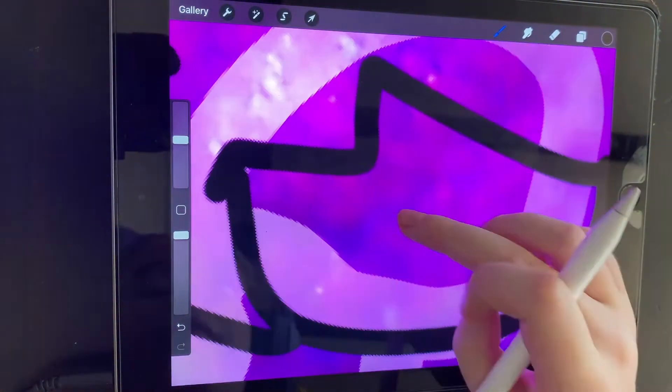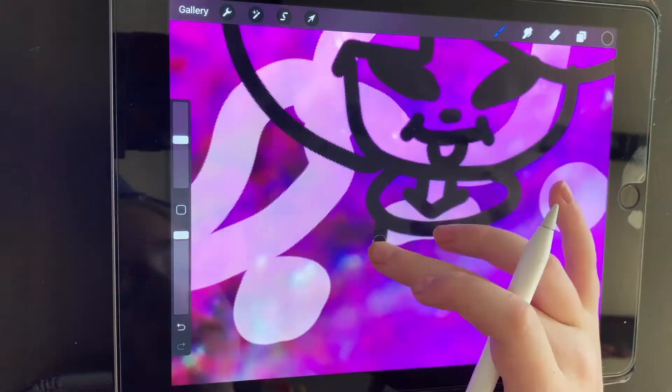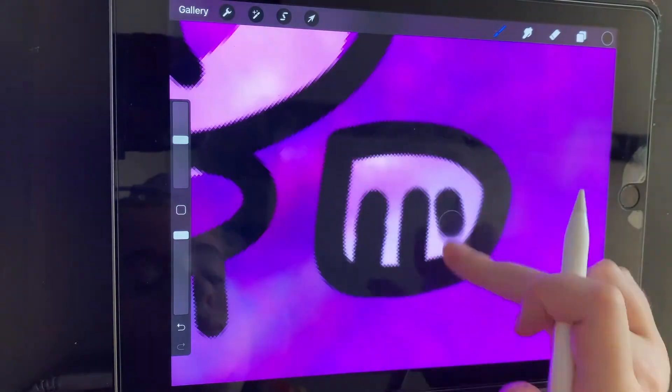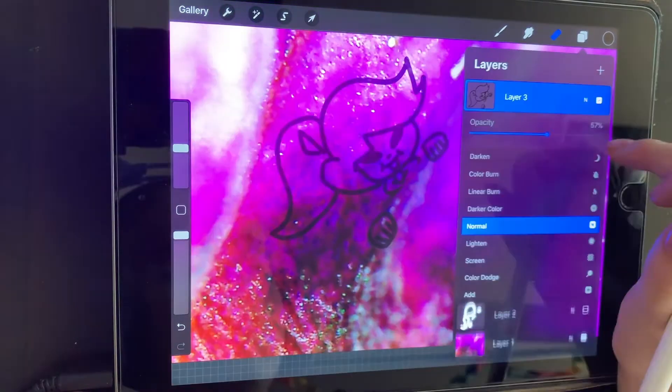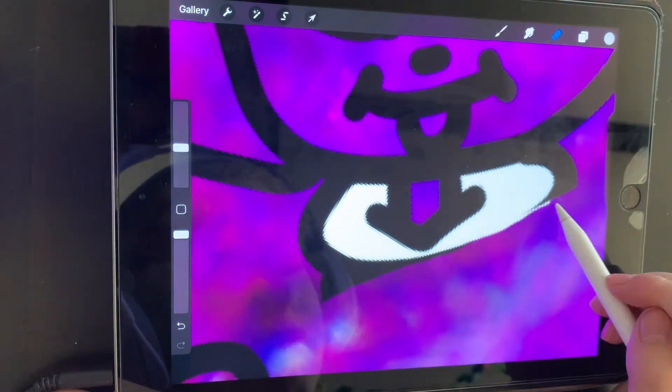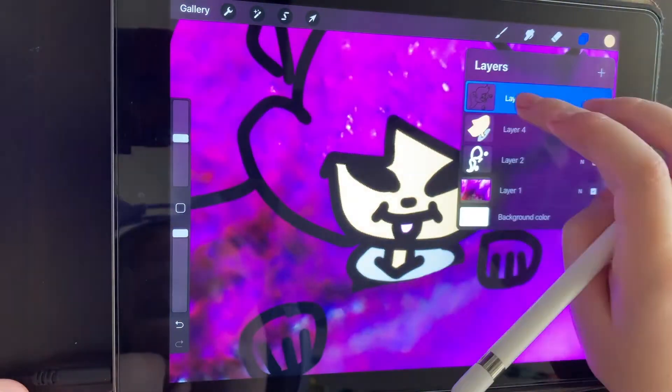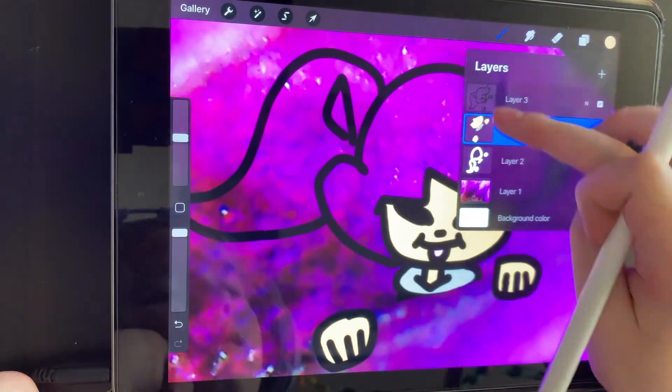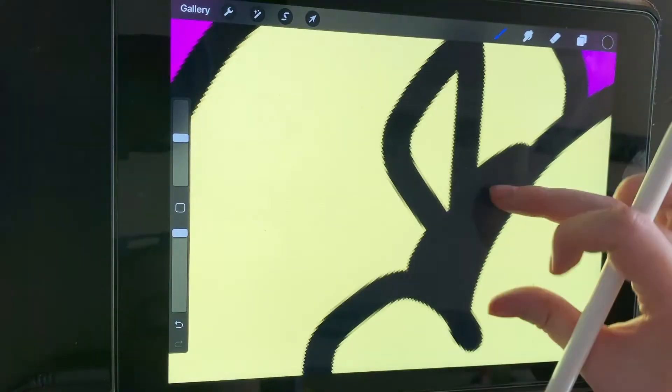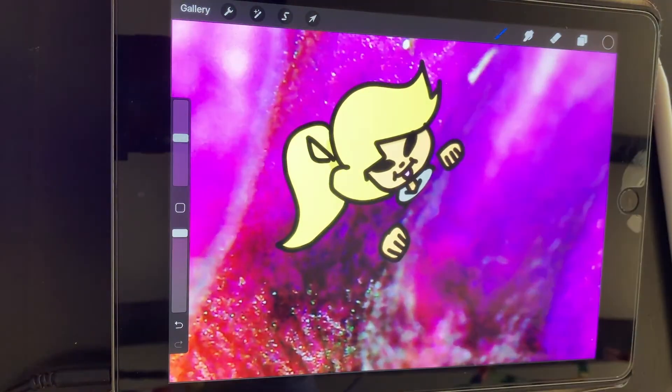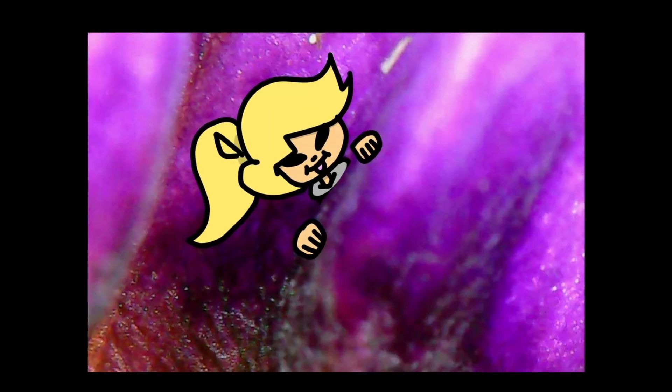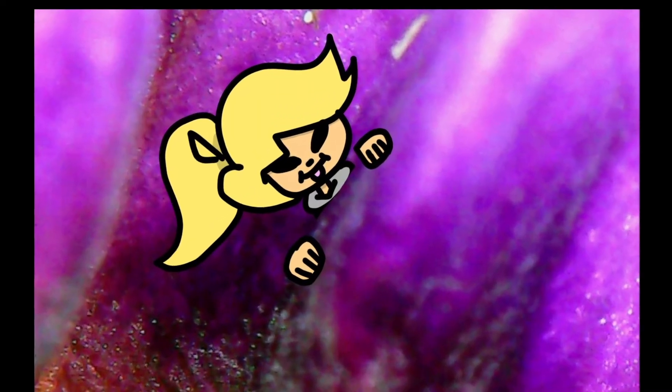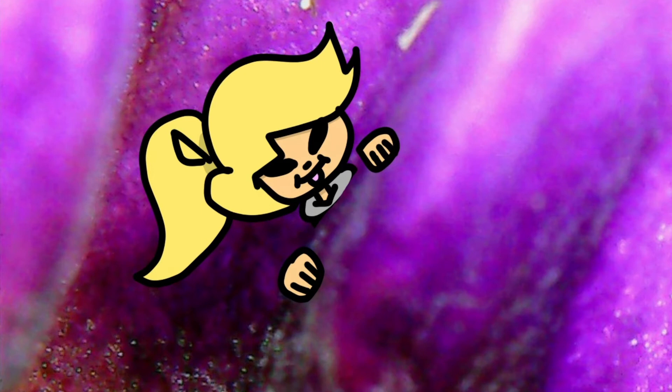So, the way that, like, the petals looked, it reminded me of, like, walls or curtains. So, I just decided to draw this little me, just peeking out of behind a corner. Yep. Exactly like that. Yeah. It's really cute.